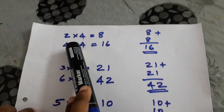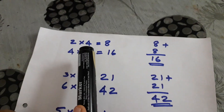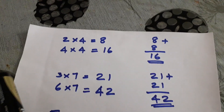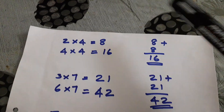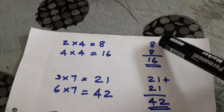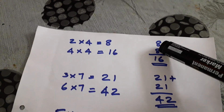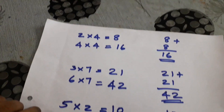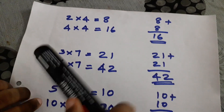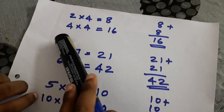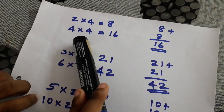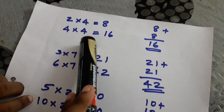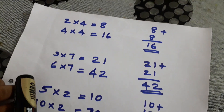2 into 4 is equal to 8. 8 plus 8 is equal to 16. So, 4 into 4 is equal to 16.